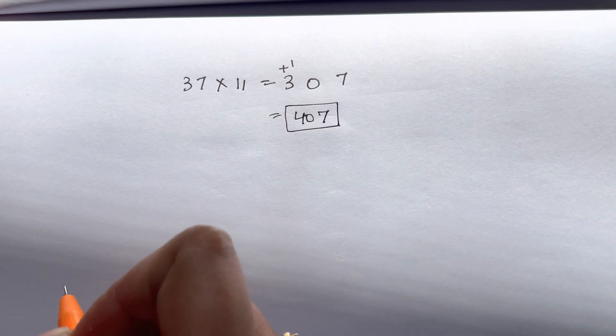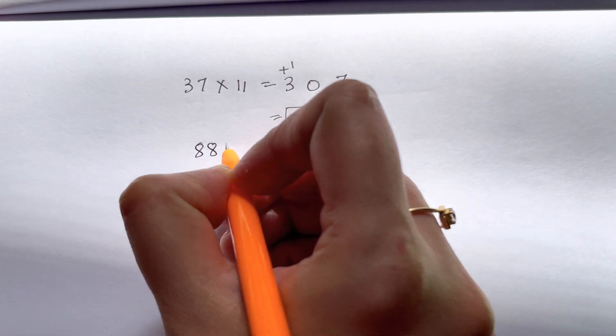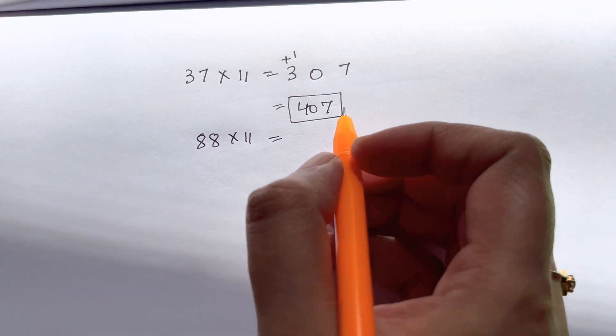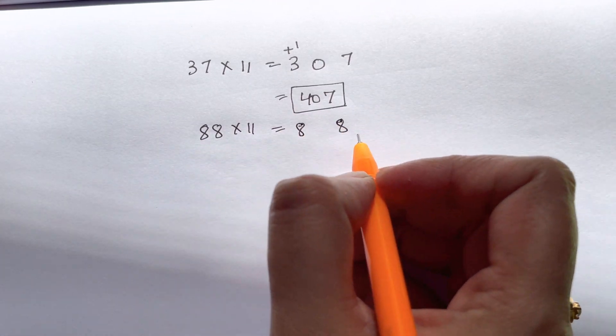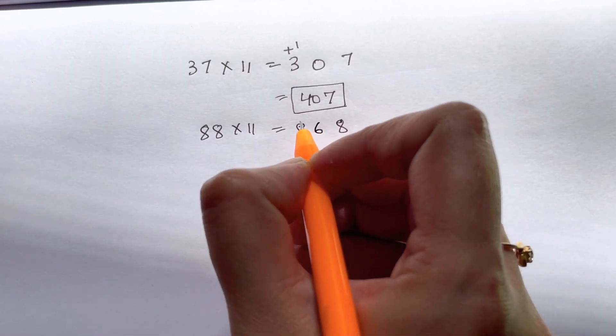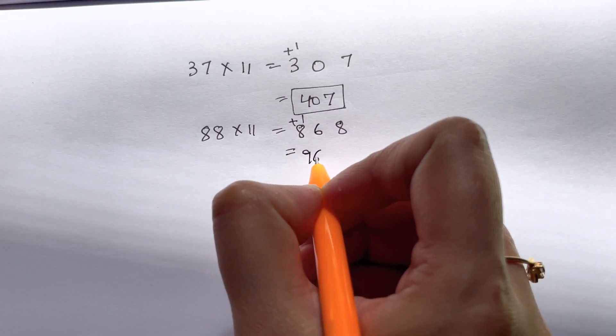Let us try another example, 88 times 11. Now you have 8 and 8, and 8 plus 8 will give you 16. So 6 and a carry over goes here, so you will just have 968.